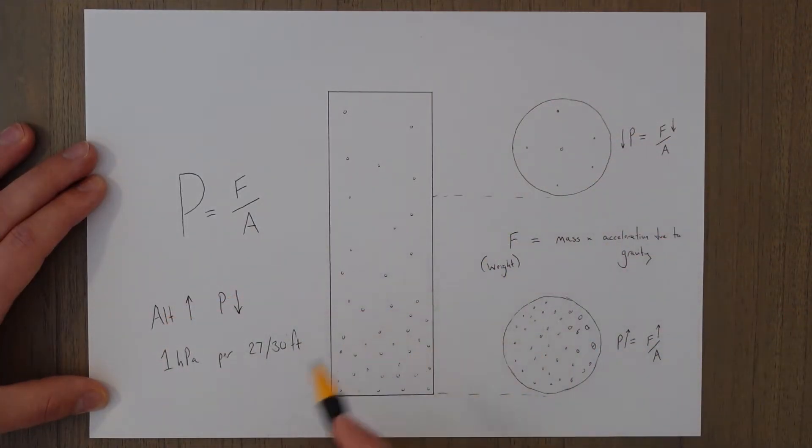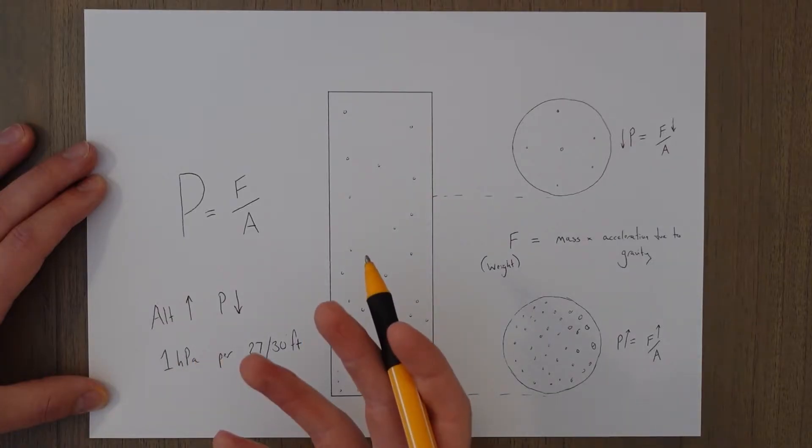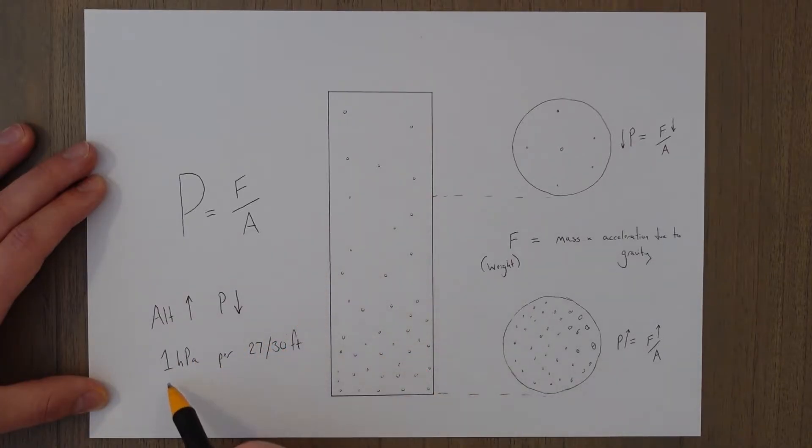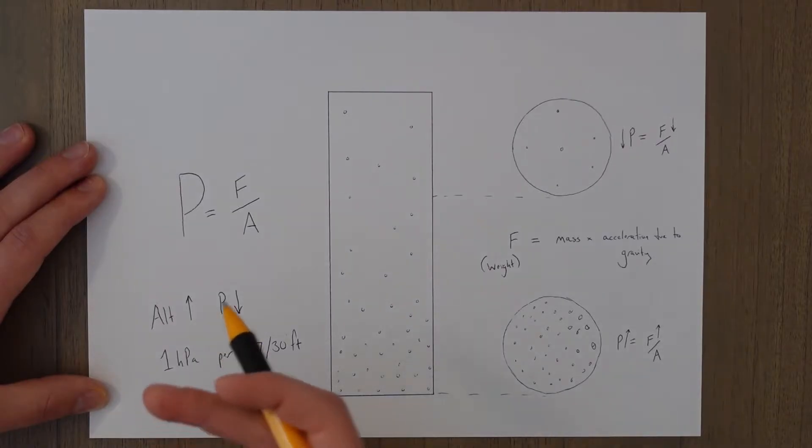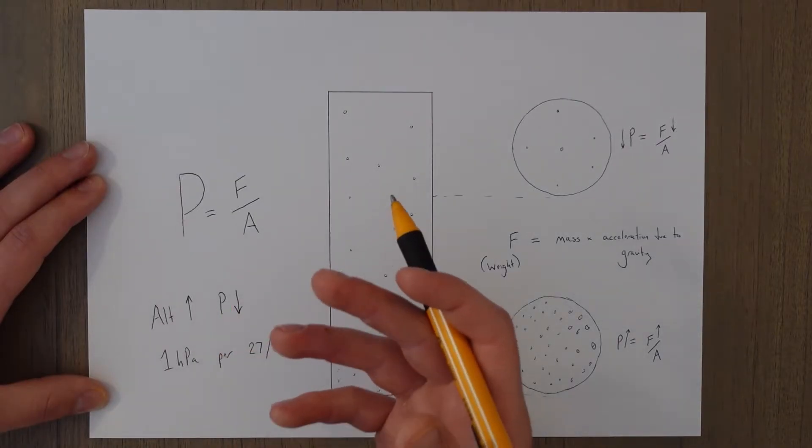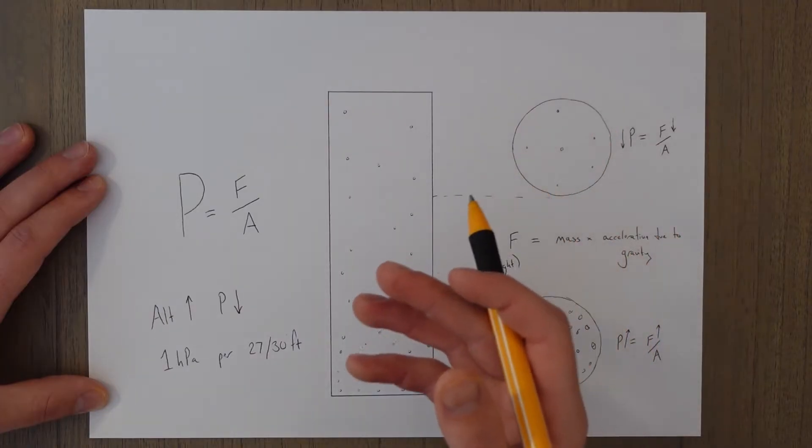We measure pressure in hectopascals, which is exactly the same thing as a millibar, so one hectopascal is one millibar. In the United States and some other countries they measure things in inches of mercury as well.